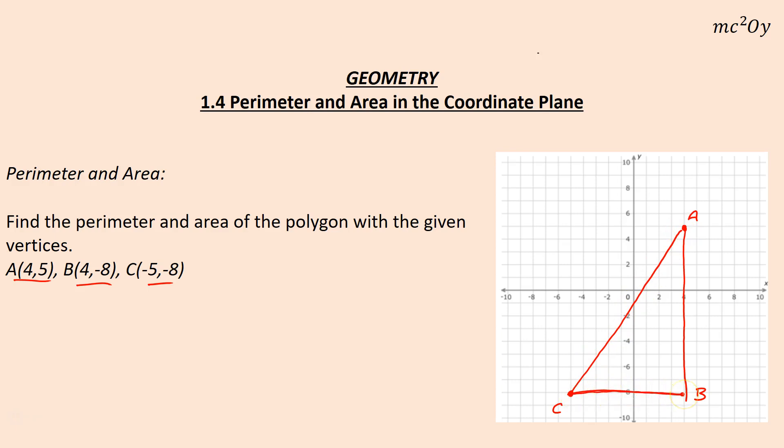With a triangle where the lines are straight vertical and horizontal like CB being horizontal and AB being vertical, you just count up the side lengths to find the perimeter. We have nine on this side. On this side we're going from -8 to 5, so that's 8 to zero plus 5 is thirteen.